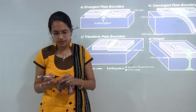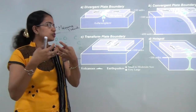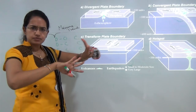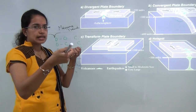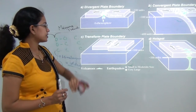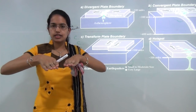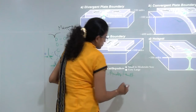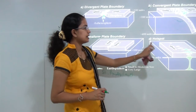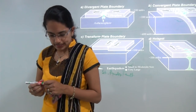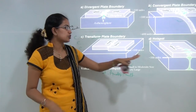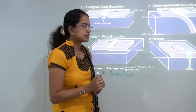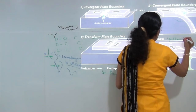Moving on to divergent plate boundaries — the plates rip apart and move away from each other. The classic example would be the plates moving apart towards the mid-Atlantic ridge. For transform plate boundaries, the plates slide past one another; the San Andreas Fault on the coast of California is a classic example. Finally, hot spots are regions where plumes over the mantle create sudden gushes of geysers and hot material from the earth's interior — the Yellowstone National Park in the United States is a best example.